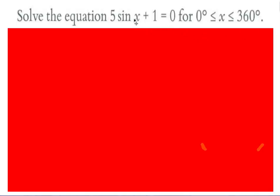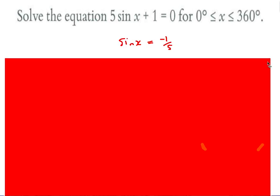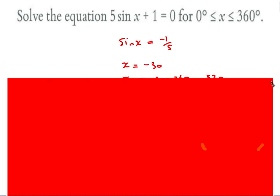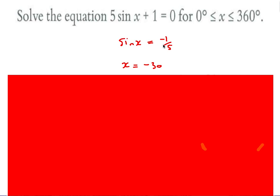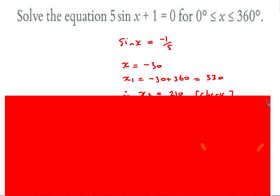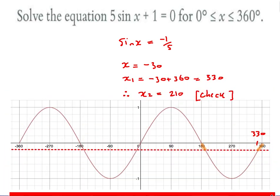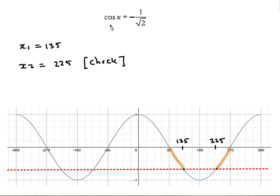Solve 5sin x + 1 = 0: rearrange to sin x = -1/5. Inverse sine gives -30° — outside the domain — so add 360 to get a first answer of 330°. Looking at the graph with line y = -1/5, you can see 330° is one intersection. By symmetry the distance from 180° is 30° on each side, so the second solution is 180 + 30 = 210°. Check: sin(210°) = -1/5 ✓